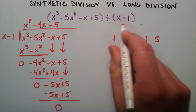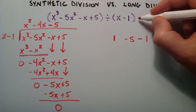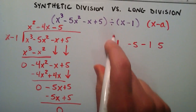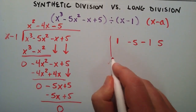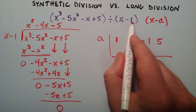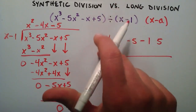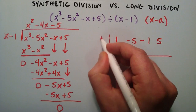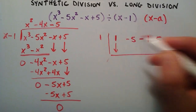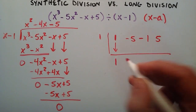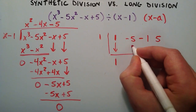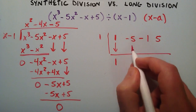The next thing we want to do is look at the divisor as x minus a, then draw a little box. We put our a term in there — in this case, our a term is one, so we write the number one here. For synthetic division, the first step is we just take the leading coefficient and write it down below. Then we take that and multiply it by a: one times one is one. We write that result here, then add the two together: negative five plus one is negative four.